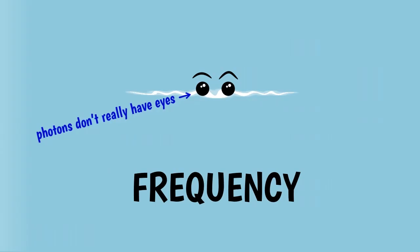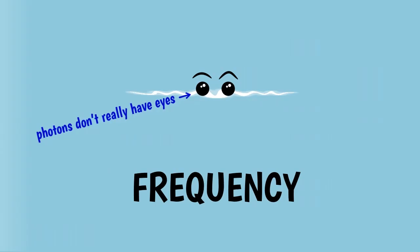Photons oscillate at different frequencies. For instance, most photons emitted by the sun or light bulbs have frequencies in the range between 450 and 750 trillion oscillations per second. One trillion is one million million, so photons can vibrate really, really fast.